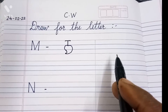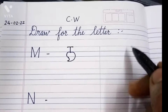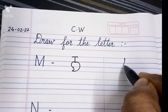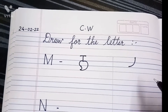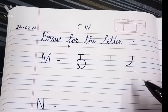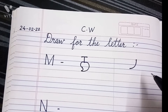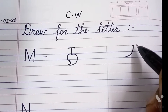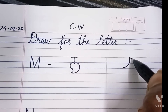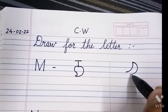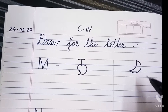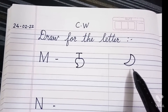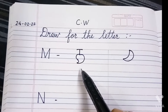Now we draw one more object for letter M. Draw one curve like this. After that, draw one more curve. This is moon. M says ma — moon. Mango and moon.